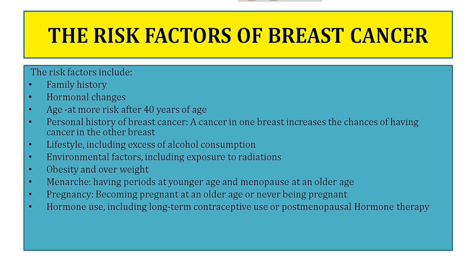Personal history of breast cancer — a woman who has had cancer in one breast has an increased chance of developing cancer in the other breast. Lifestyle factors include excessive consumption of alcohol. Environmental factors include exposure to radiation. Other risk factors include obesity or overweight, menarche at a young age or menopause at an older age, becoming pregnant at an older age or never being pregnant, and long-term use of contraceptives or post-menopausal hormone therapy.